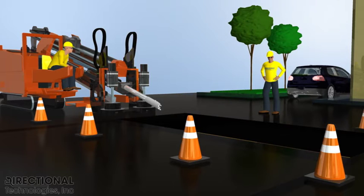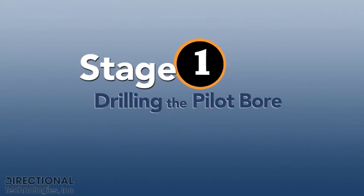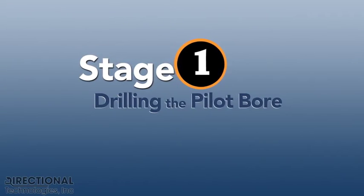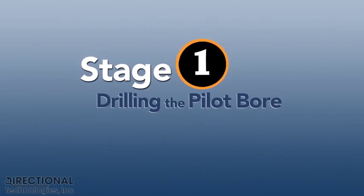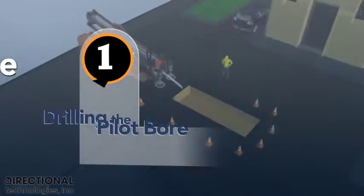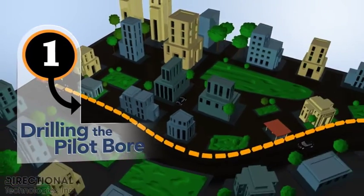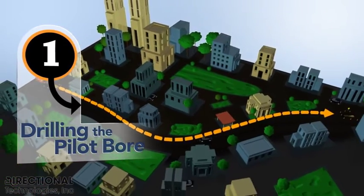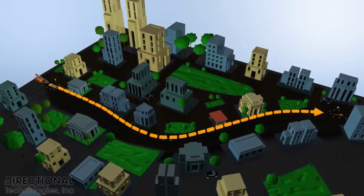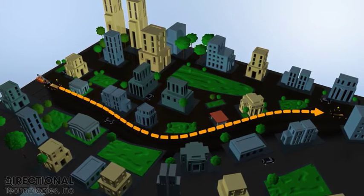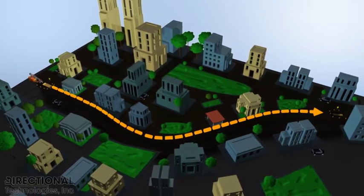A small area is needed to set up the directional drilling equipment. This area can be strategically placed away from congestion and business activities. Before the directional drilling begins, the directional drilling crew pre-plans the bore path to carefully avoid obstructions such as other underground utilities.